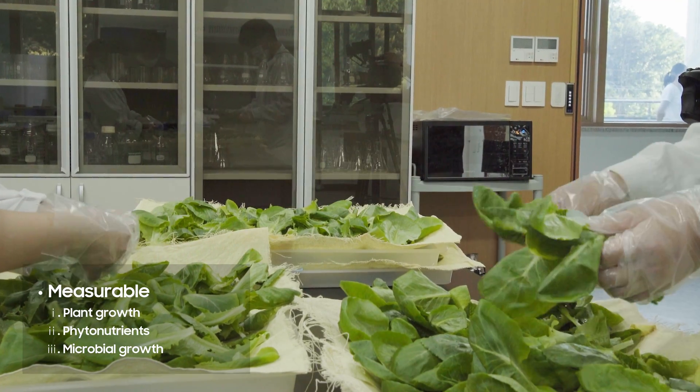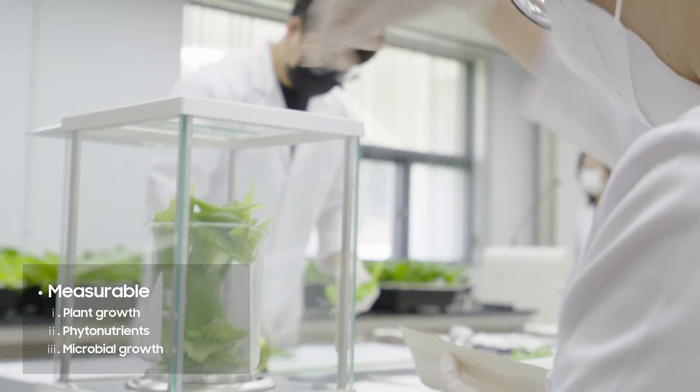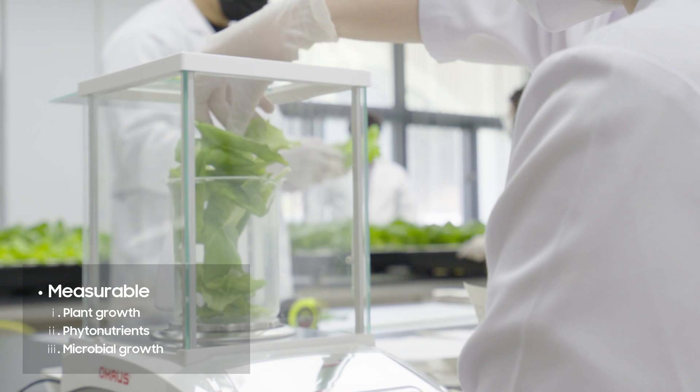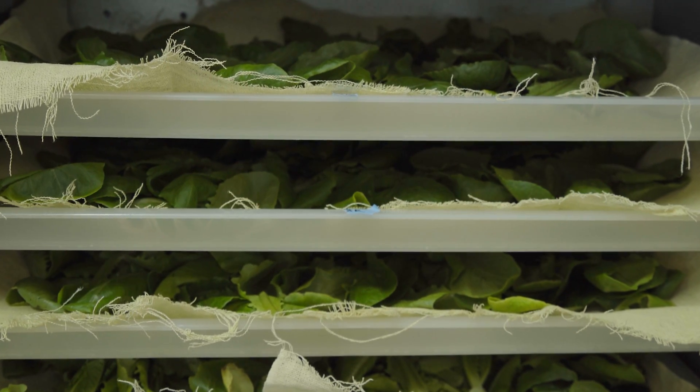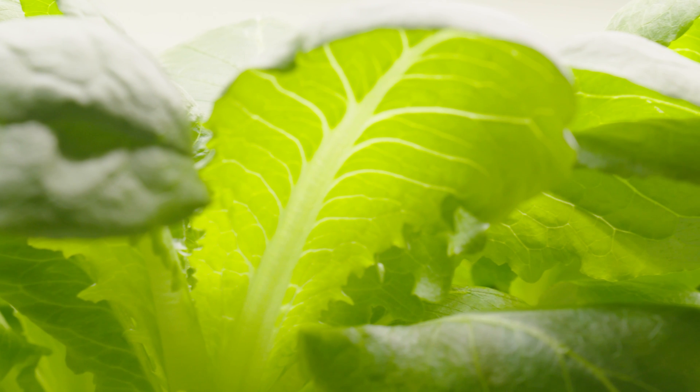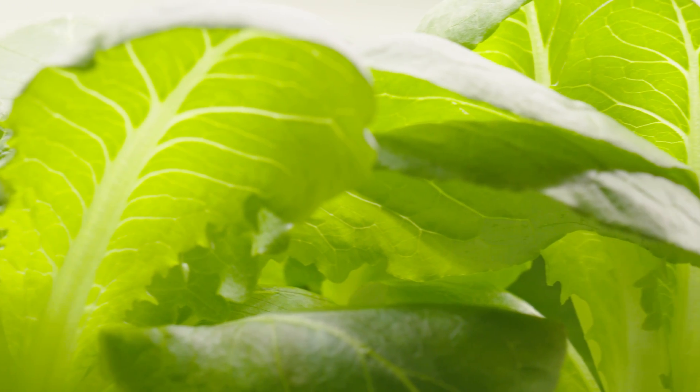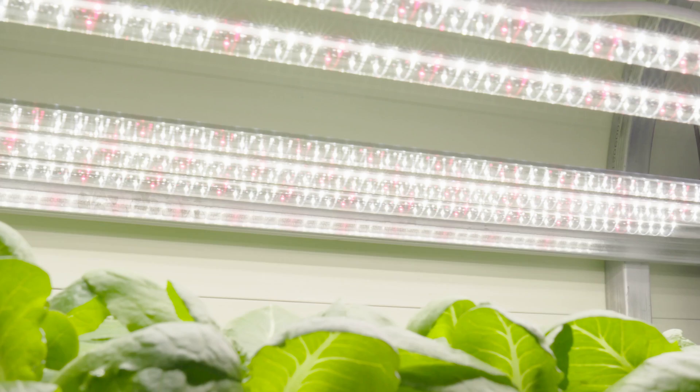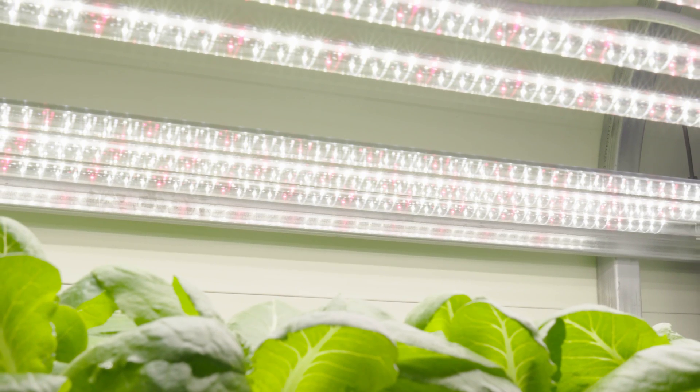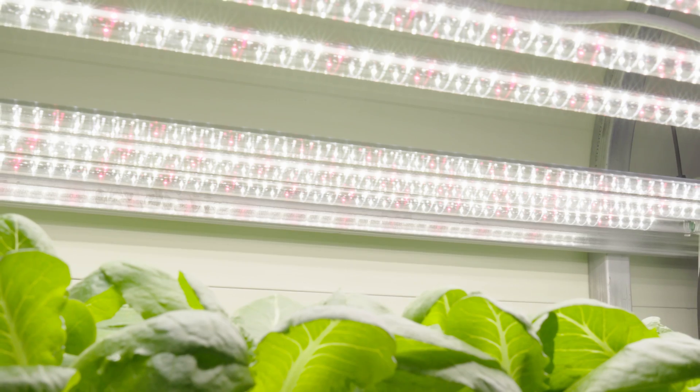We also investigated the active ingredient contents of the crops and monitored the microbial growth on the harvested crops stored in a refrigerator. The results would confirm the concrete benefits of 437 nanometer based full spectrum horticulture lighting in perspectives of crop growth, quality, and shelf life.